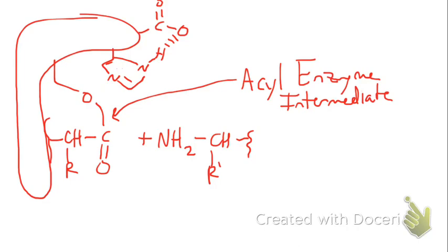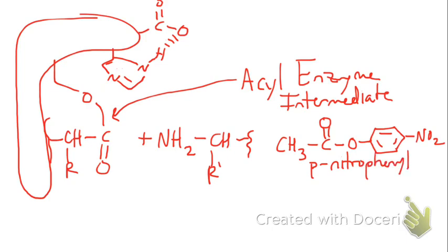The evidence for this model, the reason why we know that first step happens real quick and then it slowly occurs, is because we use this molecule to test these proteins. So this is P-nitrophenyl acetate.